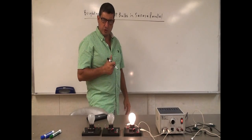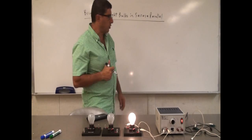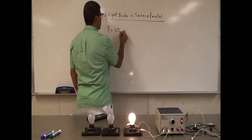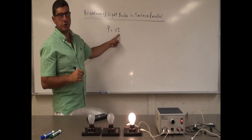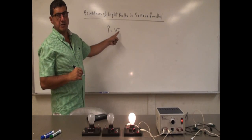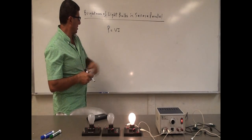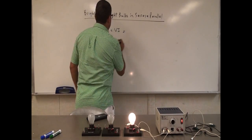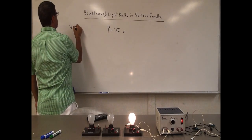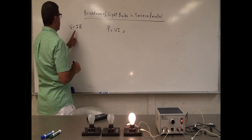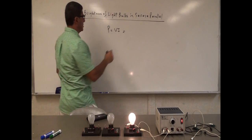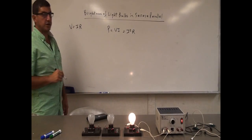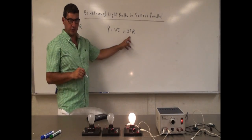One of the first things we can try out in this demo is to prove this equation: power is voltage times current. This is one of the equations that we learn in electricity. So voltage times current gives you the power of a light bulb, and then we also have from Ohm's law: voltage is current times resistance. So if we substitute that, we get current squared times resistance — that's an alternate equation for the power equation.